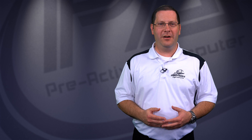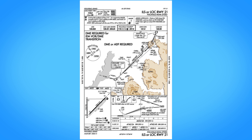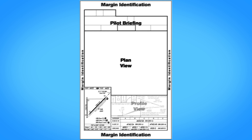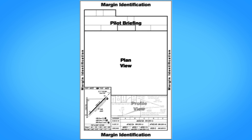These standards are used by the government, military, and sometimes corporate groups to establish approved instrument approach procedures. The standard instrument approach chart has six elements: the margin identification, pilot briefing, plan view, profile view, landing minimums, and airport diagram.